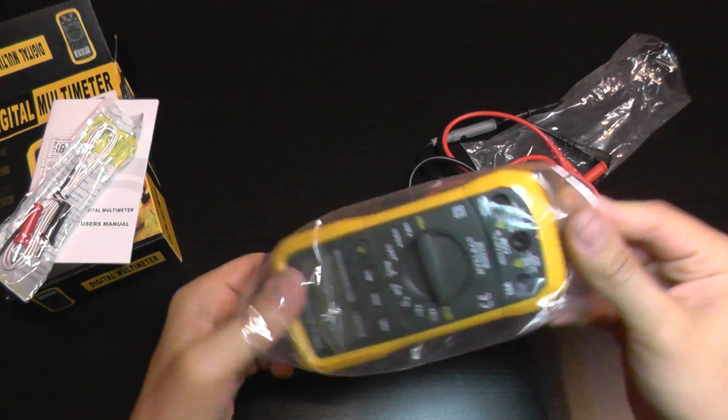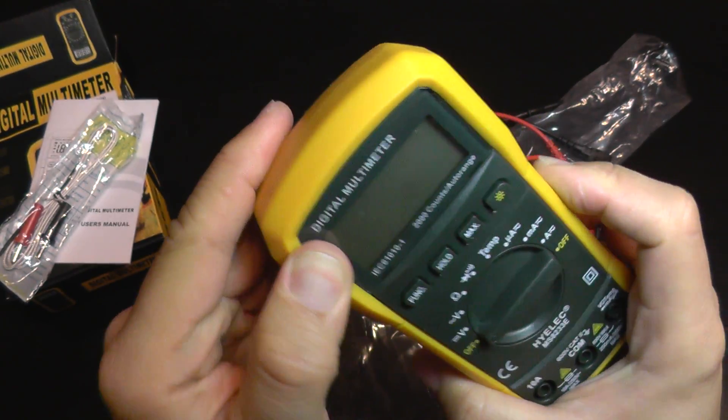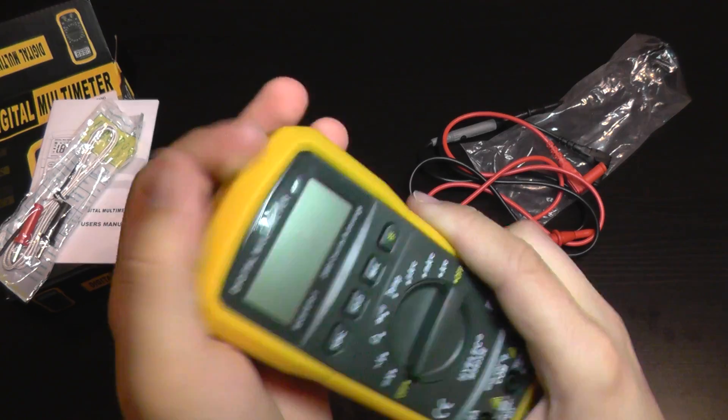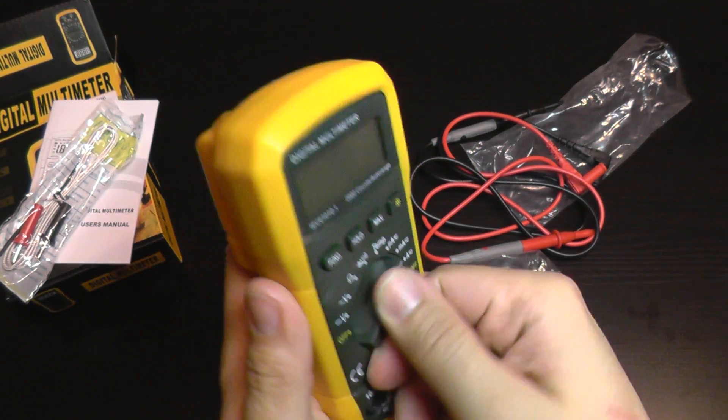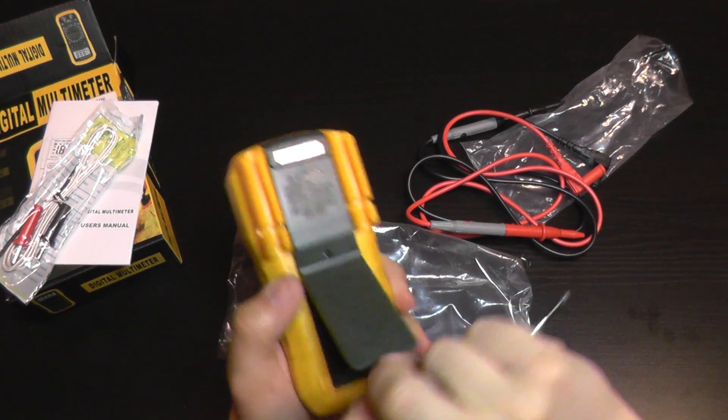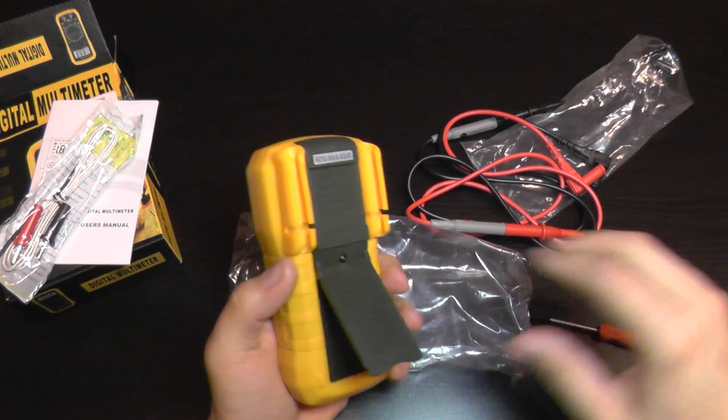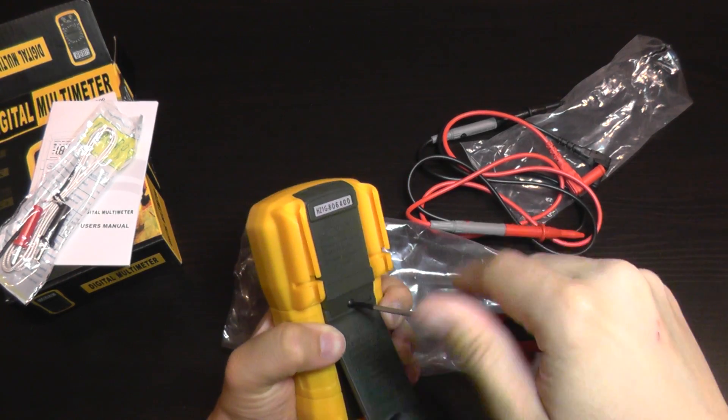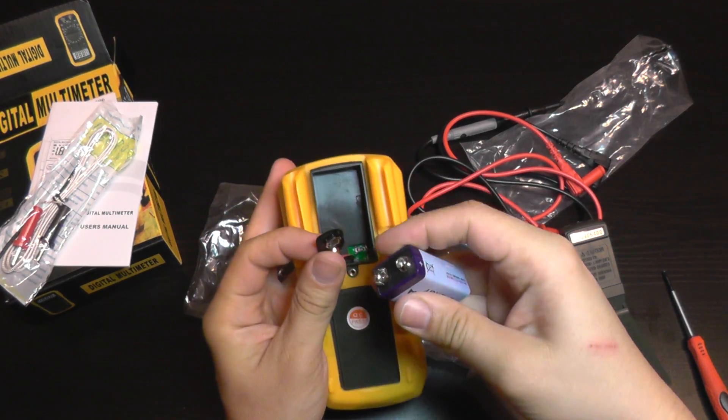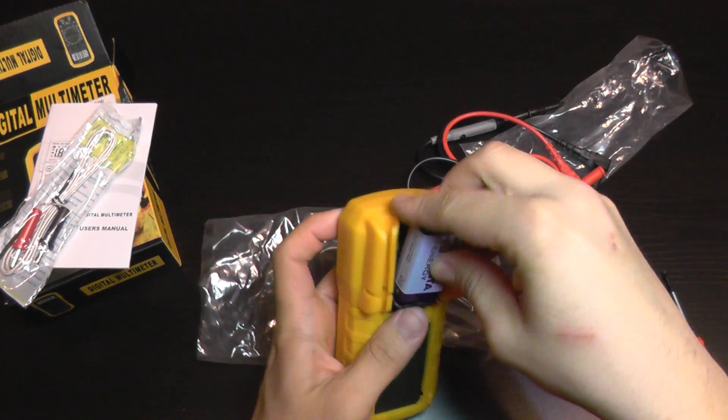Moving on to the measuring unit, it has a nice feel. It's rubberized and encased, so it's also a bit shockproof and wear-proof. Of course, it does not come with a battery, so I'm going to install one. It works with a 9-volt battery like most measuring devices in this class.